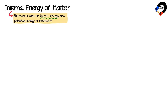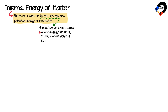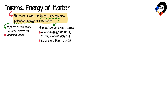Internal energy of matter: internal energy is the sum of random kinetic energies and potential energies of molecules. Kinetic energy of molecules in matter depends on its temperature. This means that kinetic energies of molecules increase as temperature increases. Therefore, kinetic energy of gases is greater than liquids, and kinetic energy of liquids is greater than solids. Potential energy of molecules in matter depends on the space between molecules. This means that potential energy of molecules increases as the separation between molecules increases.